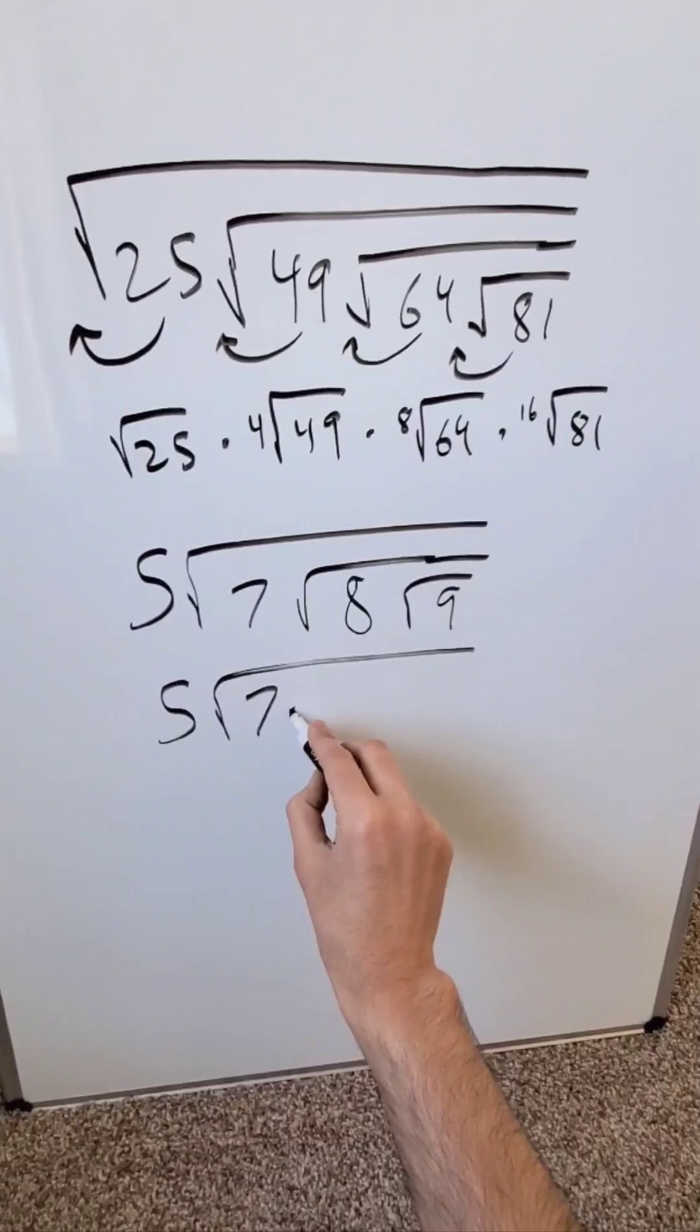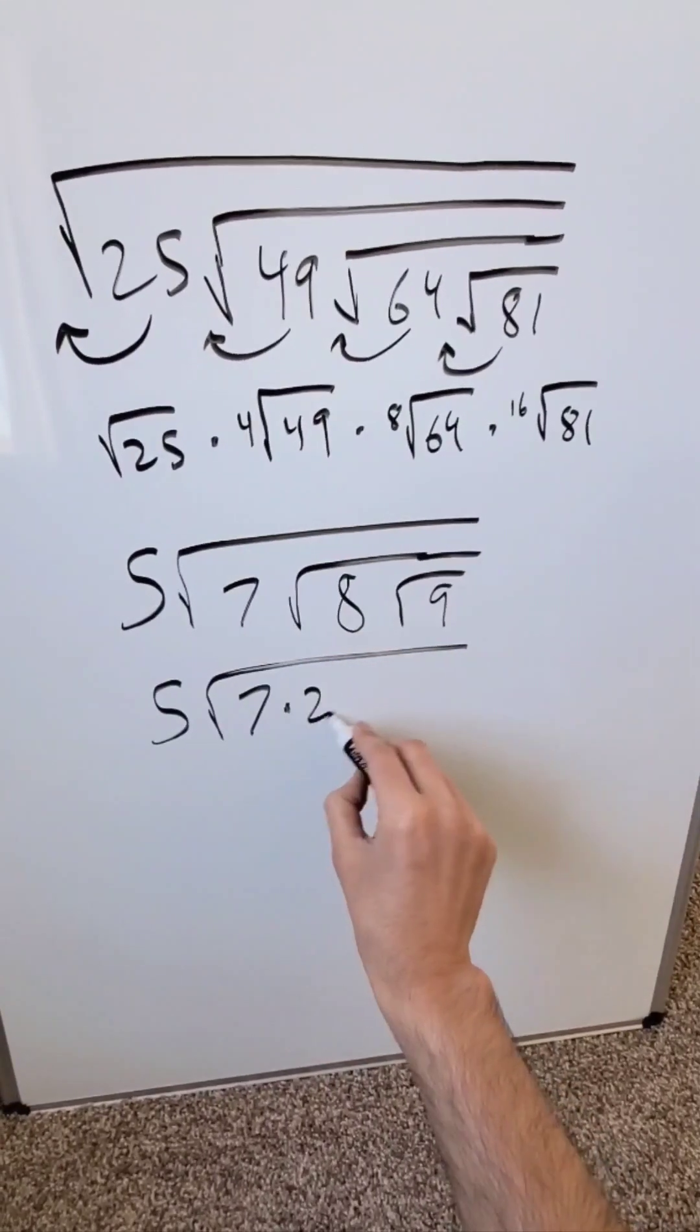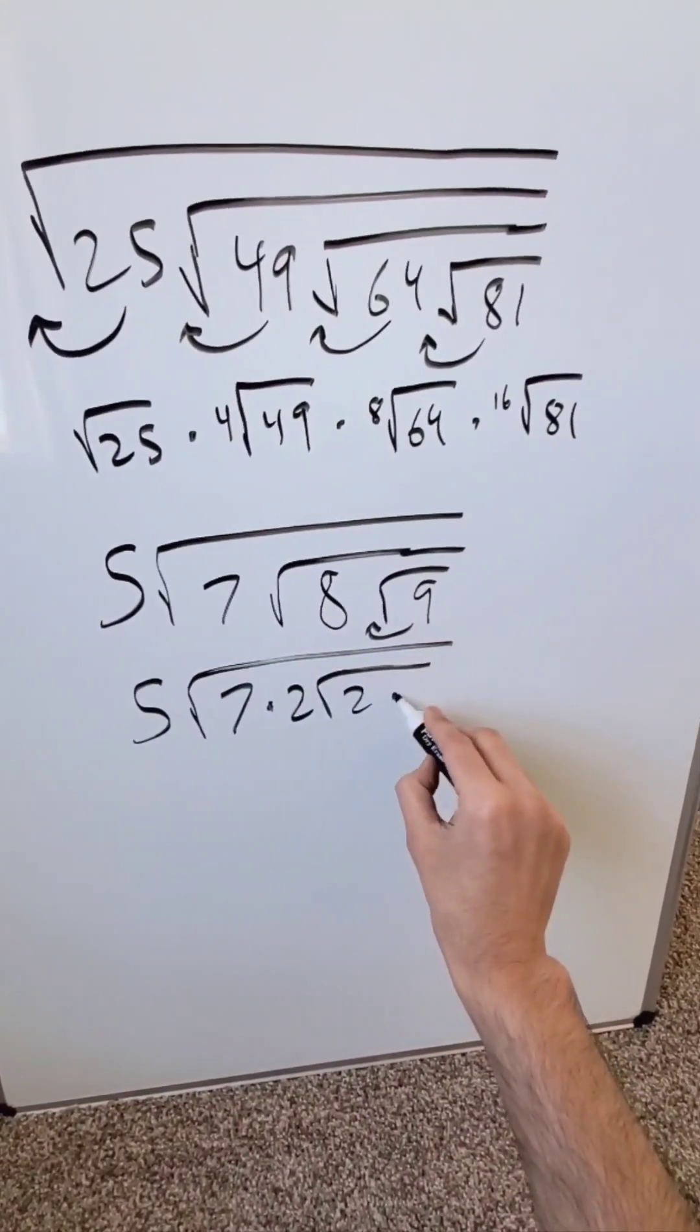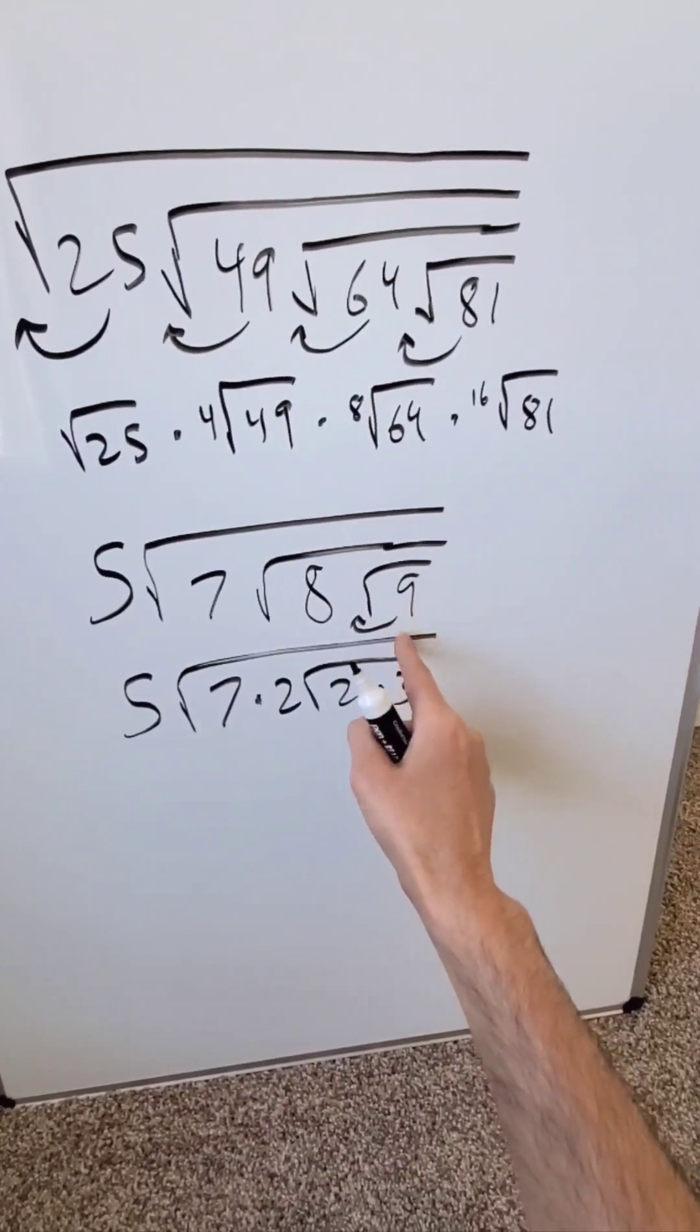I have here a 7. From the 8 I'm coming with a 2 root 2. From the 9 I'm getting here a 3—square root of 9 or the root of 9 is a 3.